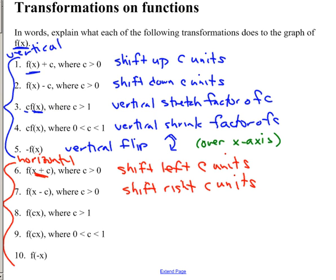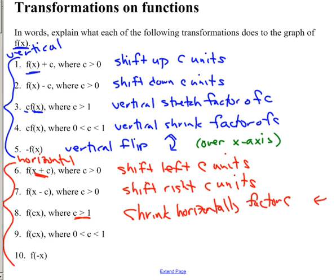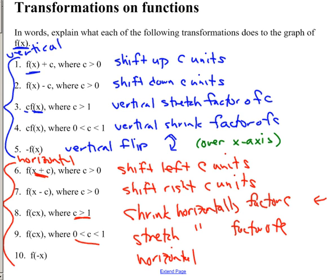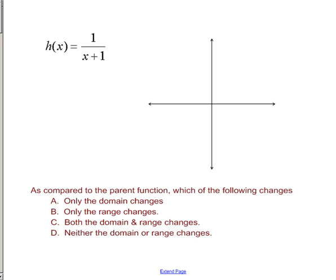It's backwards from what you would think — adding generally goes forward, but in this case it shifts backwards. Similarly with multiplying: multiplying by a big number should stretch, but since this is horizontal and horizontals are all backwards, this is going to shrink horizontally by a factor of c, which means you're going to come in towards the y-axis. And if we multiply by a small number, we stretch horizontally. And if we change the sign on our x inside, that's a horizontal flip — over the y-axis.